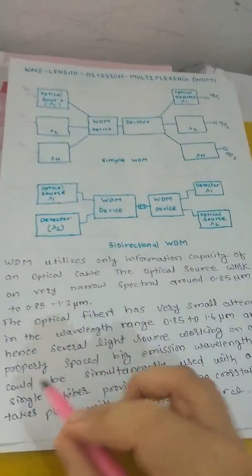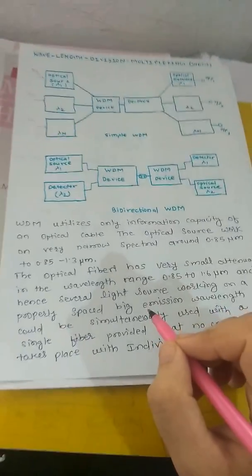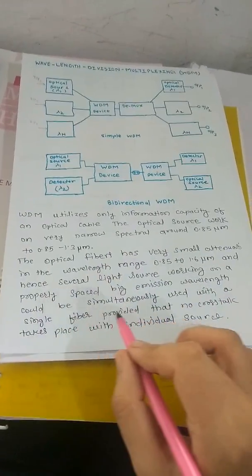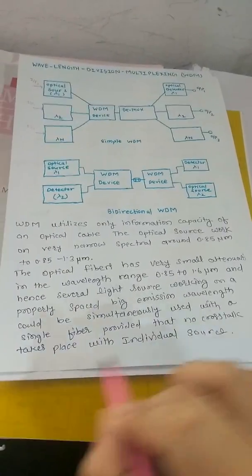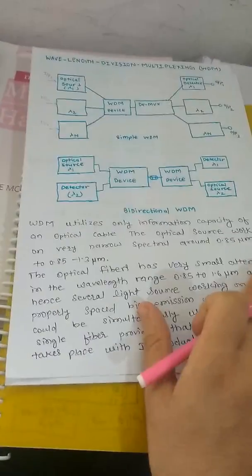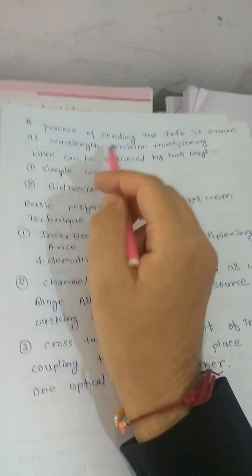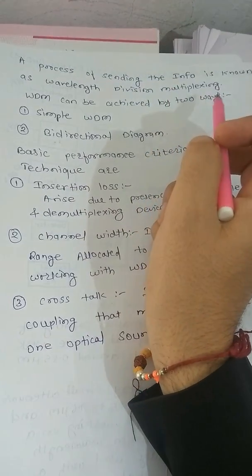light sources working on properly spaced emission wavelengths could be simultaneously used with a single fiber, provided that no crosstalk takes place with individual sources. This process of sending information is known as wavelength division multiplexing.